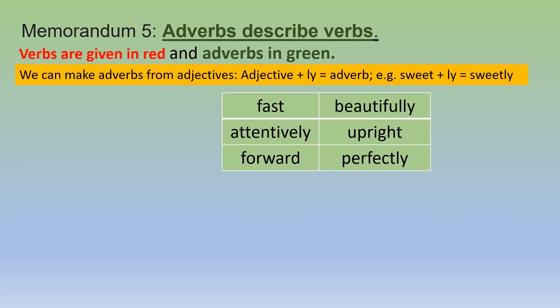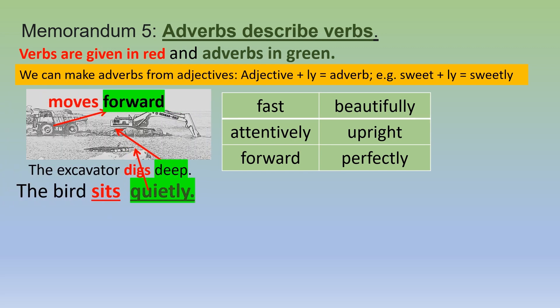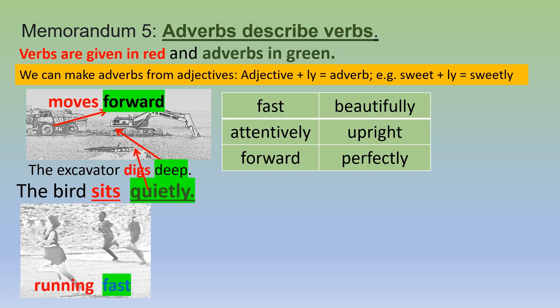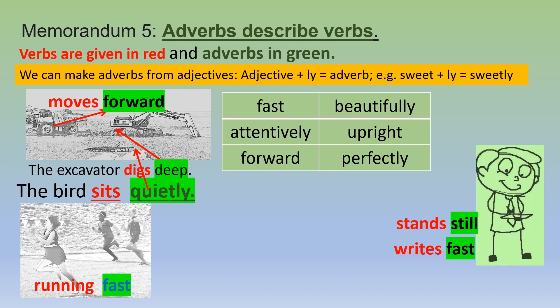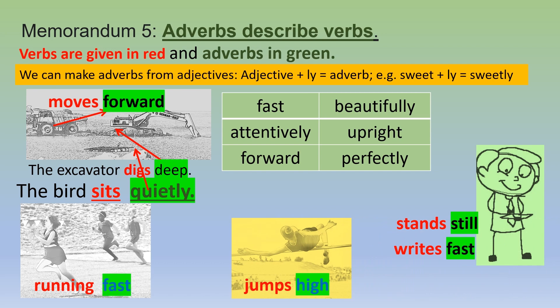Memorandum five — adverbs describe verbs. Verbs are given in red and adverbs in green. We can make adverbs from adjectives: adjective plus -ly equals adverb. Fast, attentive, forward, beautifully, upright and perfectly are our adverbs. The dock moves forward. The excavator digs deep. The bird sits quietly. The girl is running fast. The man stands still. The man writes fast. The girl jumps high.